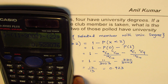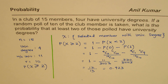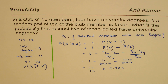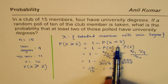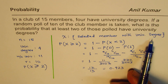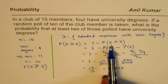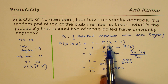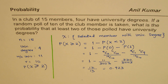So that is the probability for selecting a group with at least two members who have a university degree. This is also an example of hypergeometric distribution. Since we have success or failure — success being the selection of a member with a university degree — these are dependent events. Once you select a member, the population changes. So it's dependent events with two outcomes, success or failure — a case of hypergeometric distribution. I'm Anil Kumar. You can always share and subscribe to my videos. Thank you and all the best.